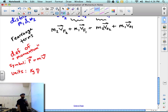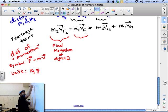So this right here is final momentum of object 2. This here, second term is final momentum of object 1.